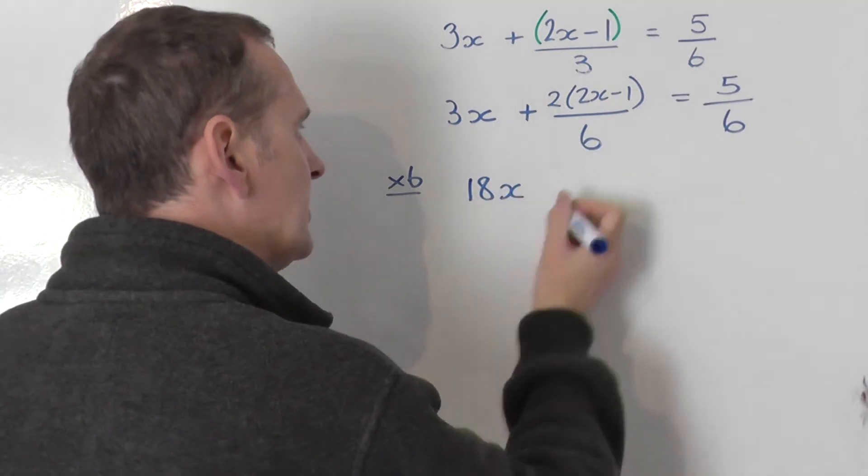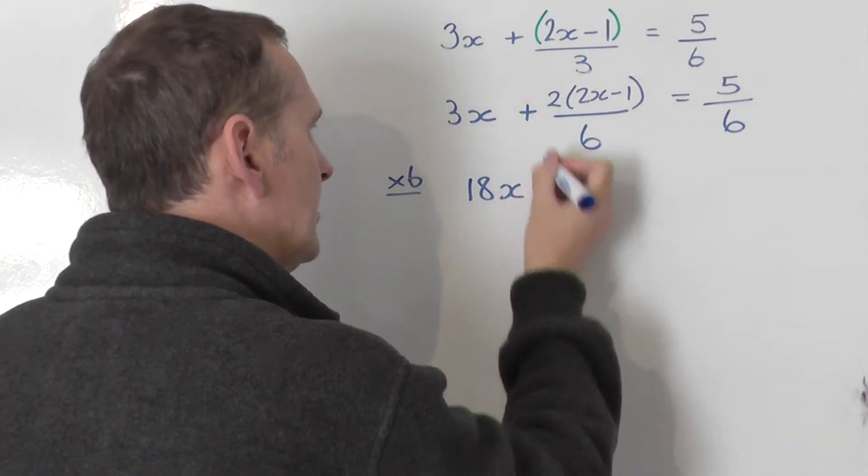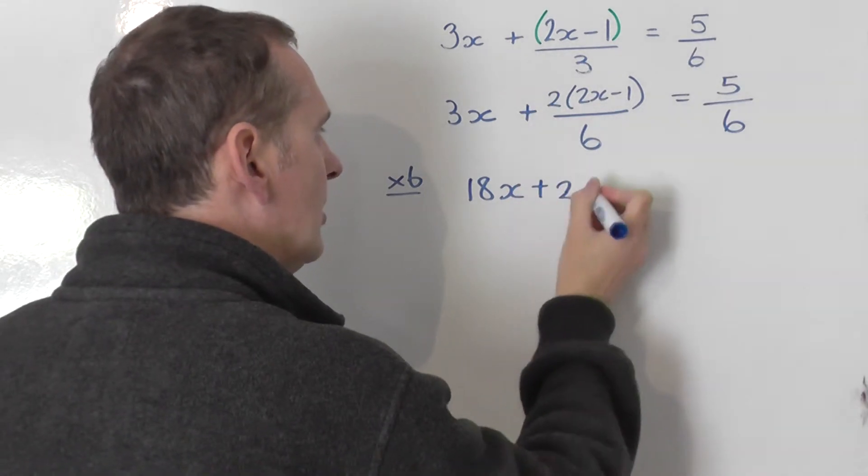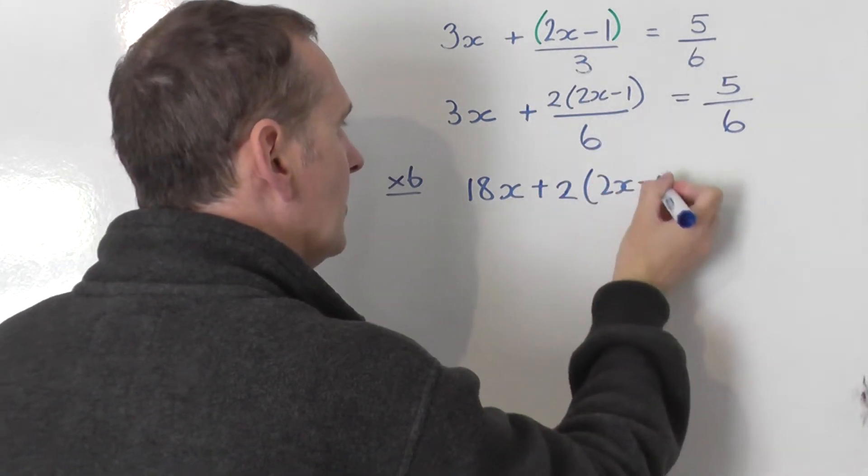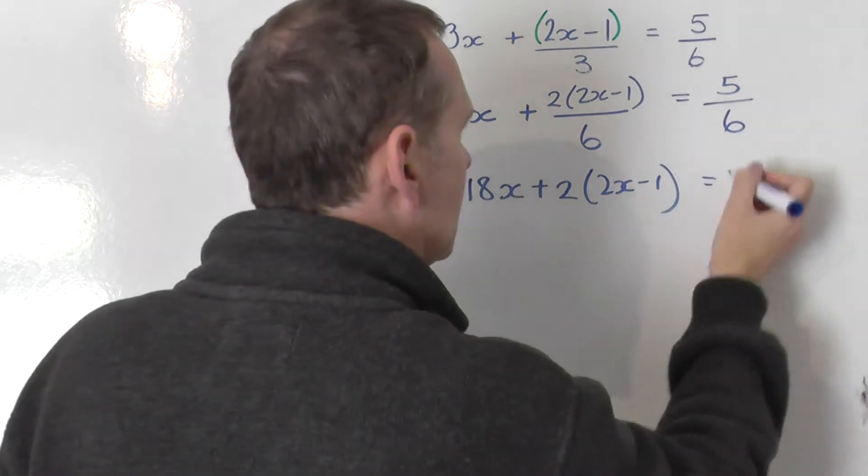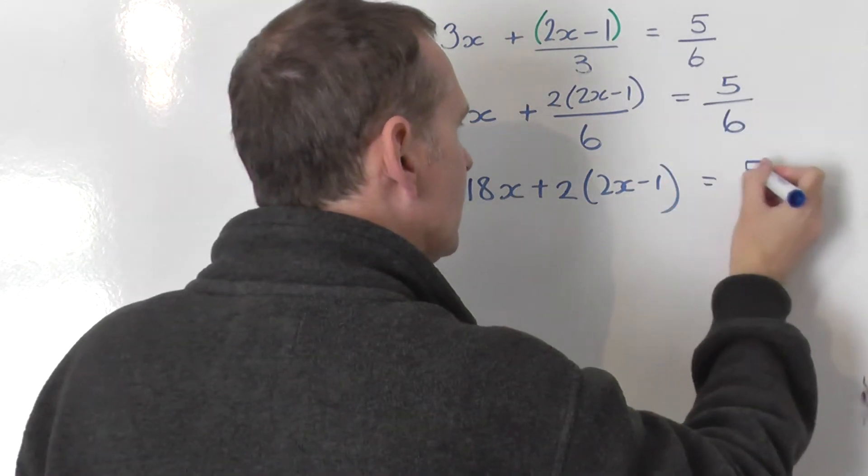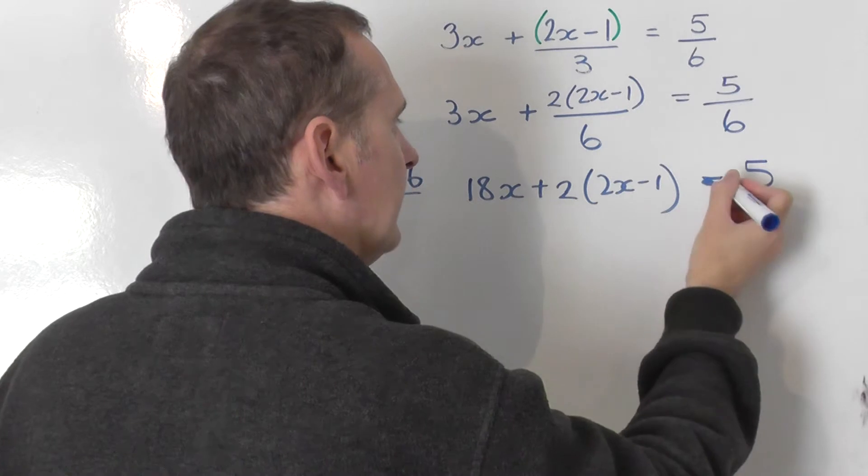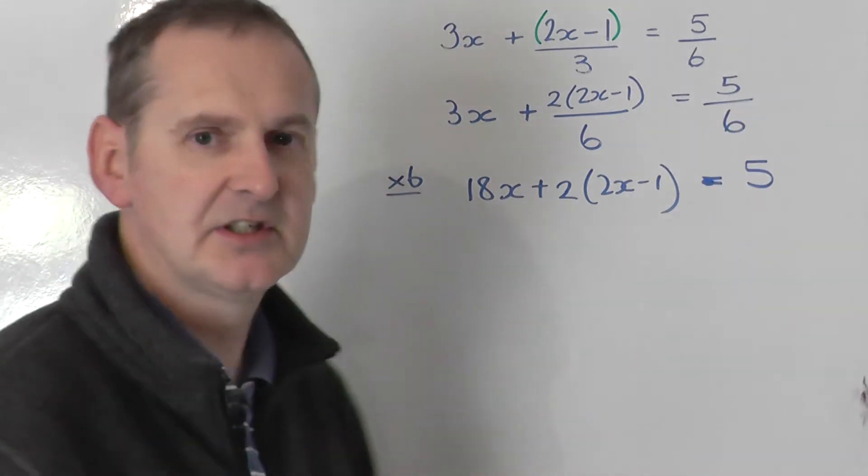If you times this by 6, you get plus, plus goes down, 2 lots of 2x minus 1, which is just the top line. I now times this by 6, you just get the top line, equals 5. So the divide by 6 has disappeared.